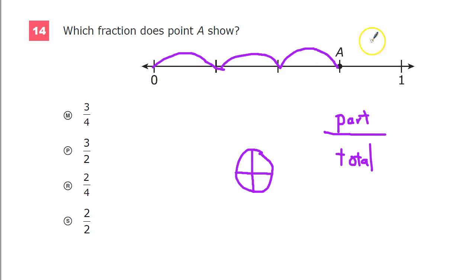So the total parts between 0 and 1, like we said, 1, 2, 3, 4. And the parts that we are interested in, the parts of interest, would be 1, 2, 3. So I would say that this is 3 over 4.